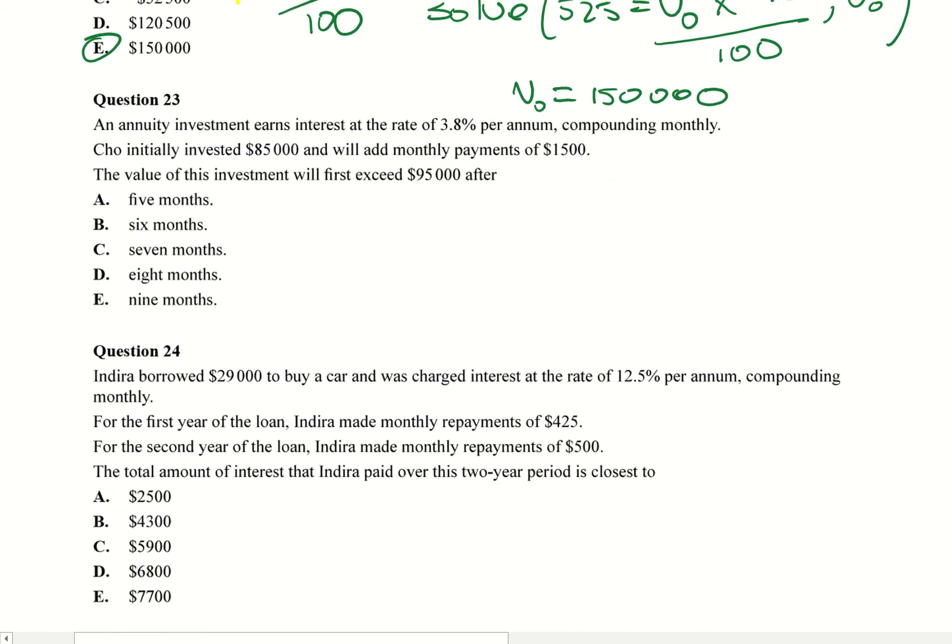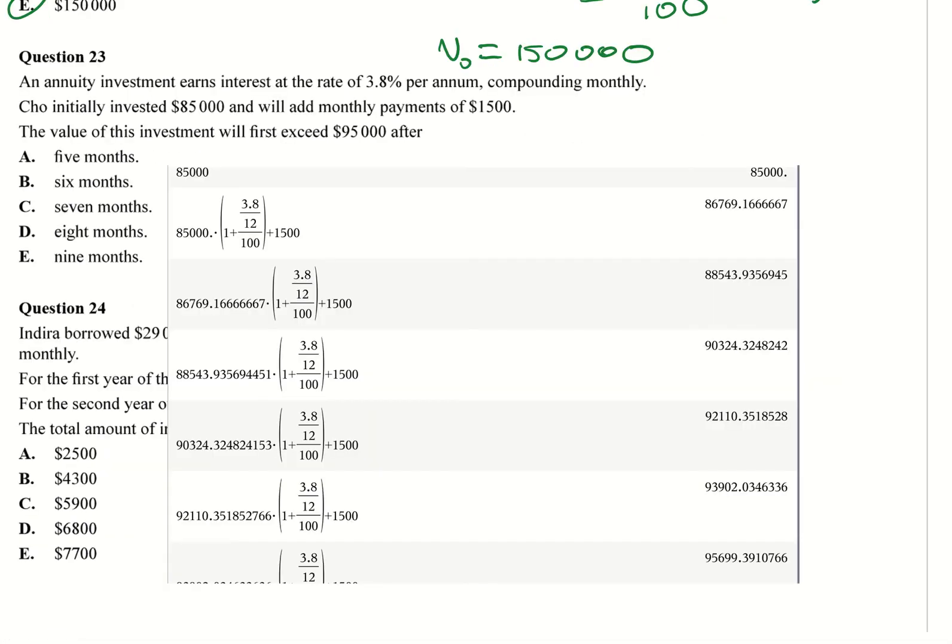An annuity investment earns interest at a rate of 3.8% per annum compounding monthly. Cho initially invested $85,000 and will add monthly payments of $1,500. The value of this investment will first exceed $95,000 after... So what I've done here is the way I look at doing this. I made 85,000, I'll call it V0. I made this basically the answer and that's what that is, because that's taking it from here. It's just a little way you can use your thing.